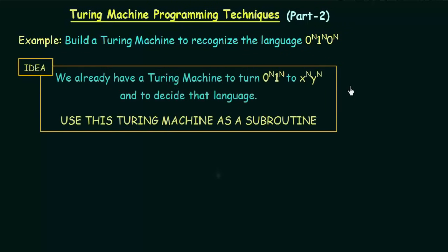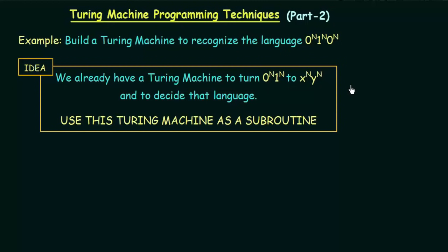Here is the idea. We already have a Turing machine to turn 0^n 1^n to x^n y^n and to decide that language. If you remember, we have already designed this Turing machine in one of the previous lectures where it was made to recognize the language 0^n 1^n, and what it was doing was turning 0^n 1^n to x^n y^n.